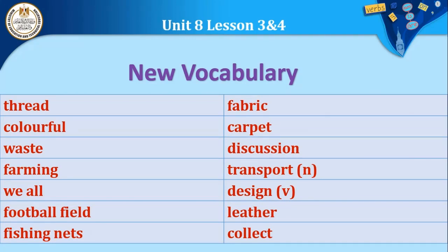'Fabric' — any type of cloth is called fabric. 'Carpet' — any rug/carpet is called a carpet. 'Discussion' is a noun; its verb is 'discuss', meaning to discuss/يناقش; discussion means the discussion/المناقشة. 'Transport' can be both a noun — meaning transportation/النقل — and a verb meaning to transport/ينقل. 'Design' can mean the design or to design — note the silent G. 'Leather' is a noun meaning leather. 'Collect' means to collect/يجمع.